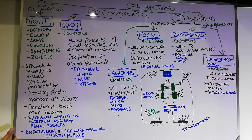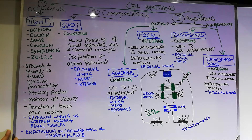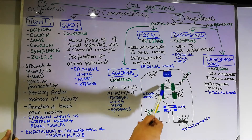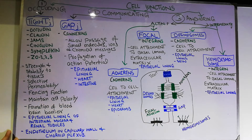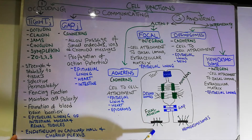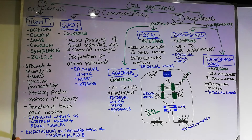Today we are going to discuss cell junctions, or membrane junctions. Cell junctions are basically the connection between two neighboring cells — for example, this is one cell and this is another cell, and there are connections between them. It might also be a connection between a cell and the extracellular material. On this basis, there are basically two types of cell junctions: intercellular junctions, or junctions between a cell and the extracellular material.